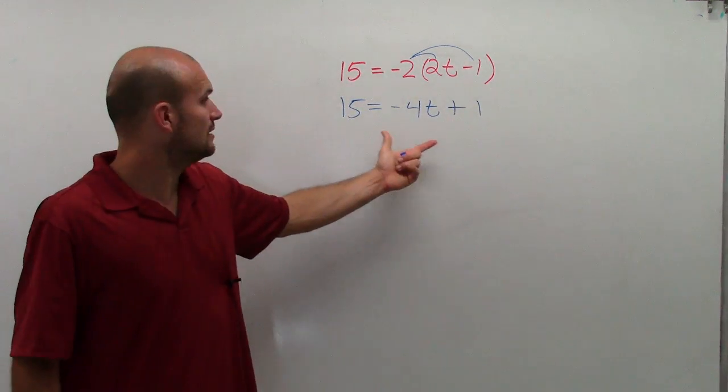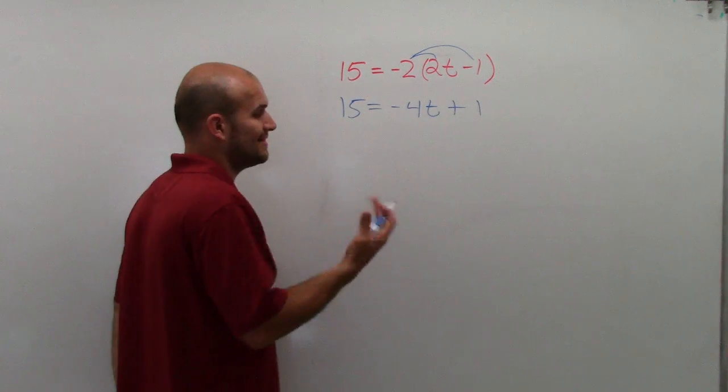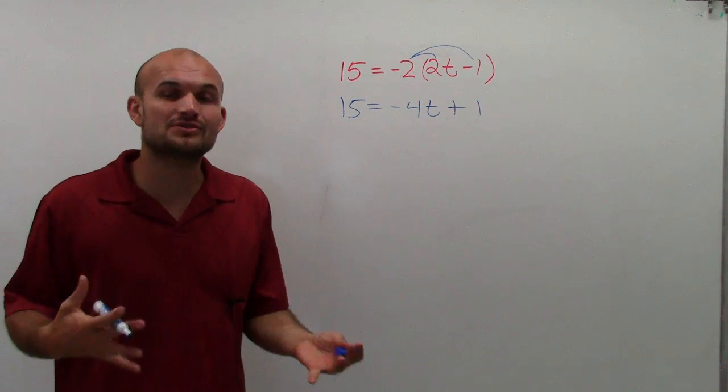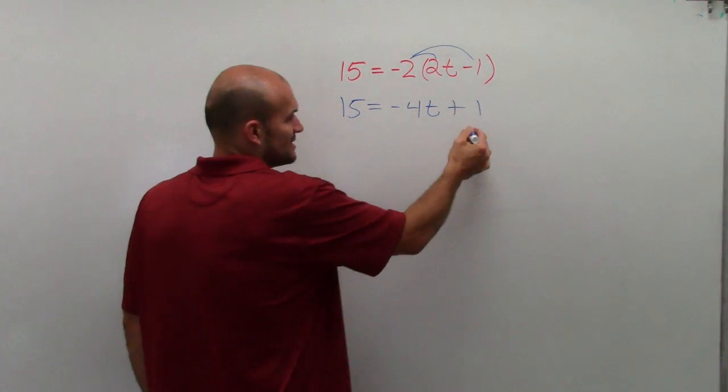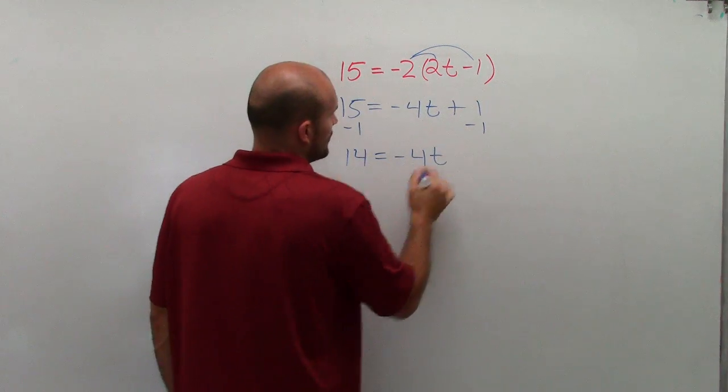See, now I have a two-step equation, which is perfect, exactly what I was looking for. And that's really easy because I'm very used to doing two-step equations. First thing I do is I subtract the 1, so I have 14 equals a negative 4t.